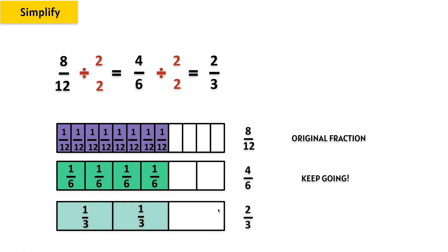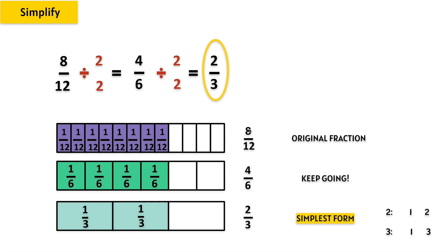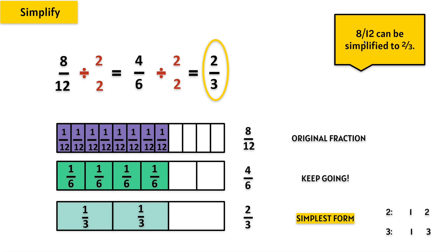4 divided by 2 is 2 and 6 divided by 2 is 3, giving us 2 thirds. Can we still simplify? Only 1 times 2 makes 2, and the only factors that make 3 are 1 and 3. If we divide by 1 the fraction stays the same, so 2 thirds is the simplest form of 8 twelfths. 8 twelfths can be simplified to 2 thirds. On this example we divided twice. If you use the greatest common factor you only have to divide once, or you can slowly get there by dividing multiple times until the fraction can no longer be divided.